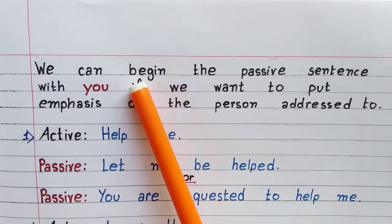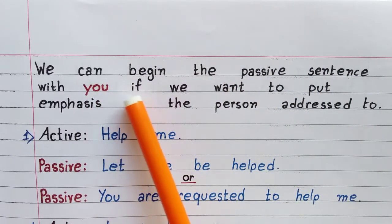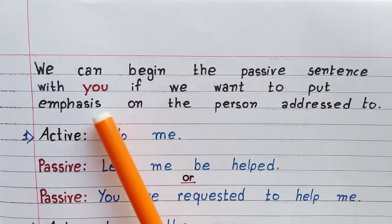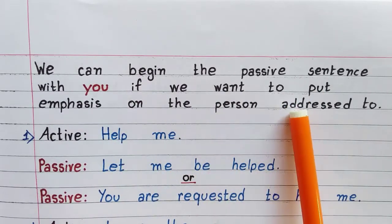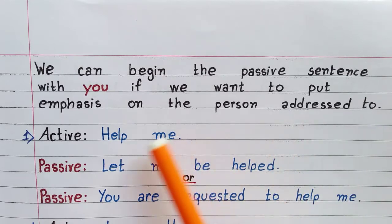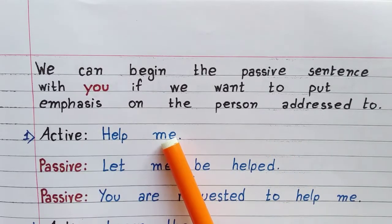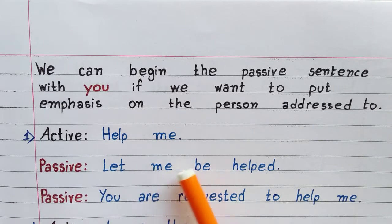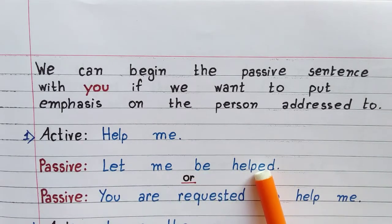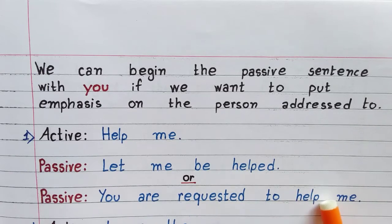We can begin the passive sentence with 'you' if we want to put emphasis on the person addressed. Let us look at the first example. Active: help me. Passive: let me be helped, or — you are requested to help me.